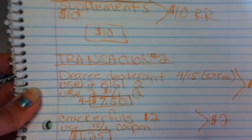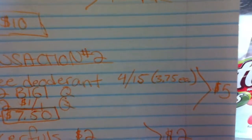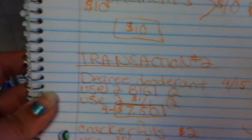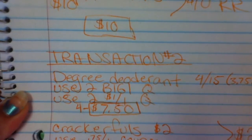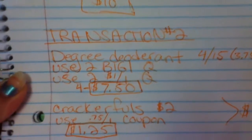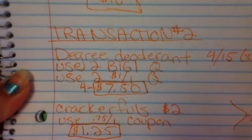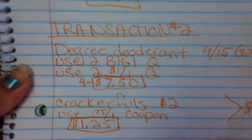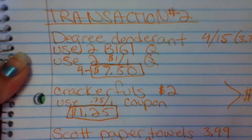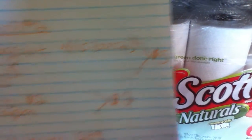Transaction number two. Degree deodorant on sale, four for $15, which is $3.75 each. Use two buy one get one free coupons. Use two $1 off of one coupons. That's a total of four coupons for four items. So you get four for $7.50, and you get the $5 register rewards back.